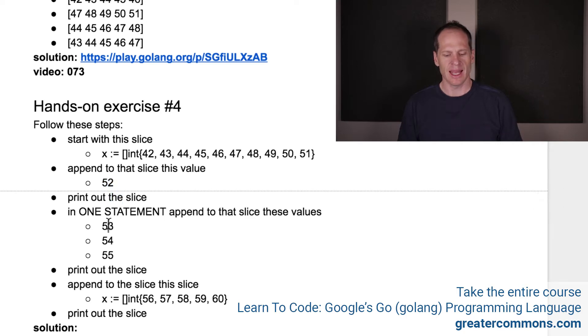So you just put that into the GoLang Playground and then append to that slice this value and print out the slice. And then in one statement, append to that slice these values and then print out the slice. And then append to the slice this slice. And I'm going to make that Y and then print out the slice. So we're going to do all those steps.